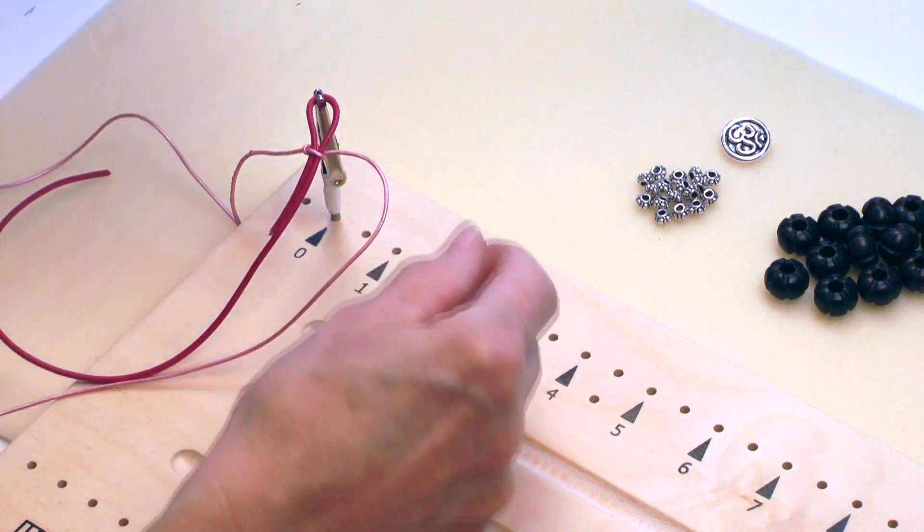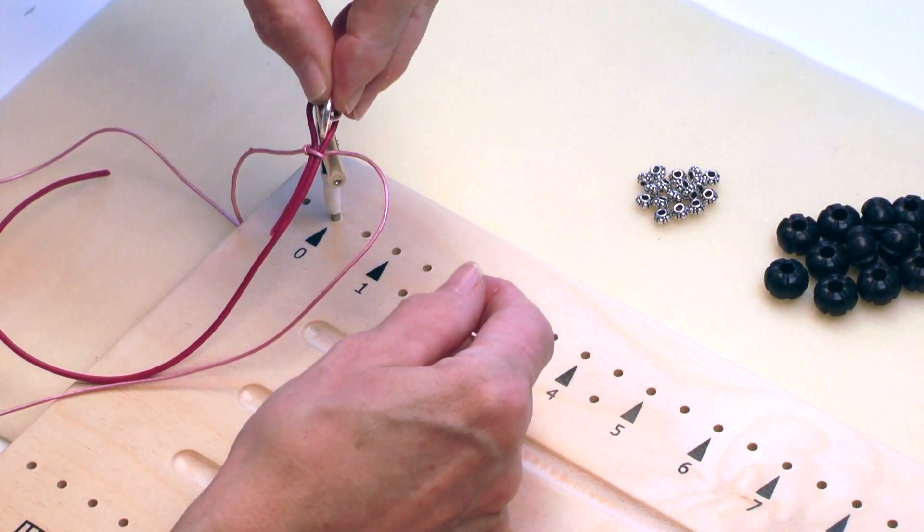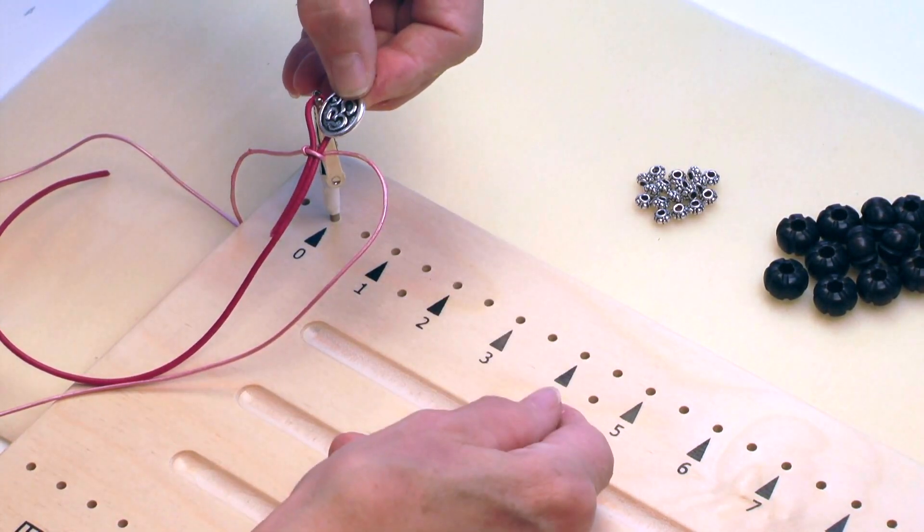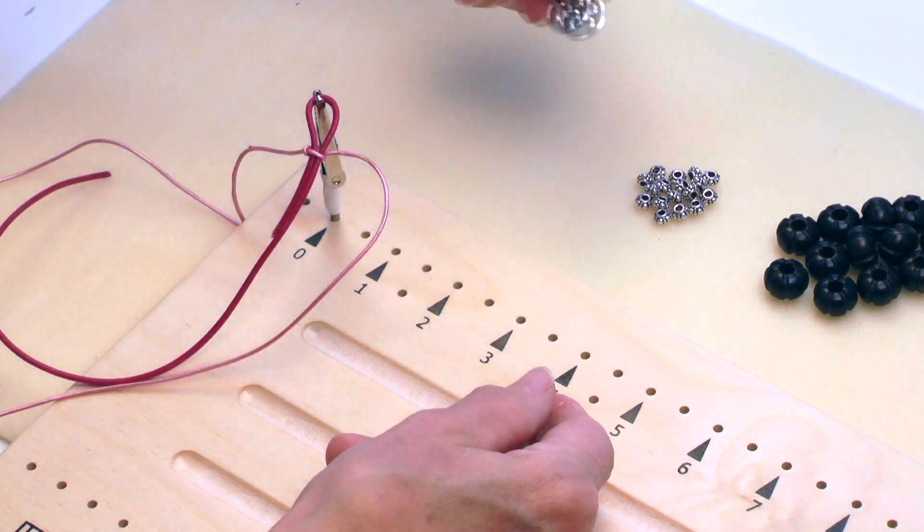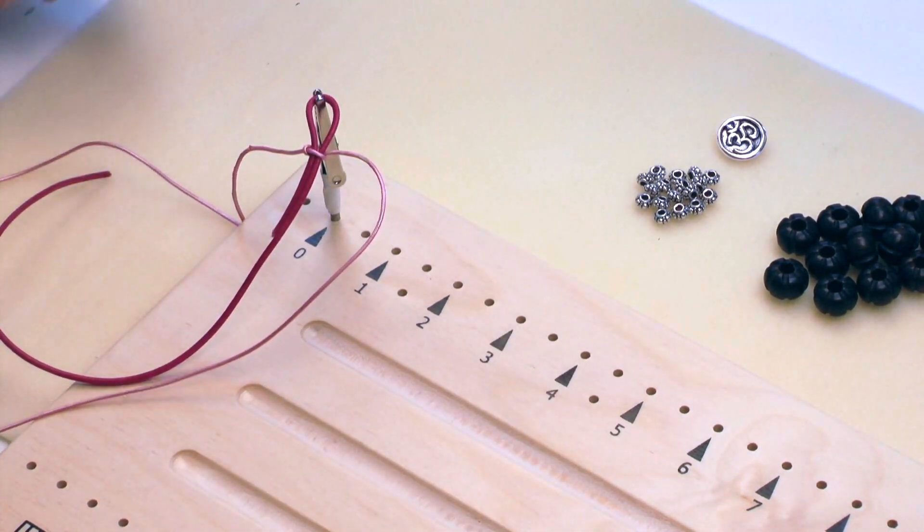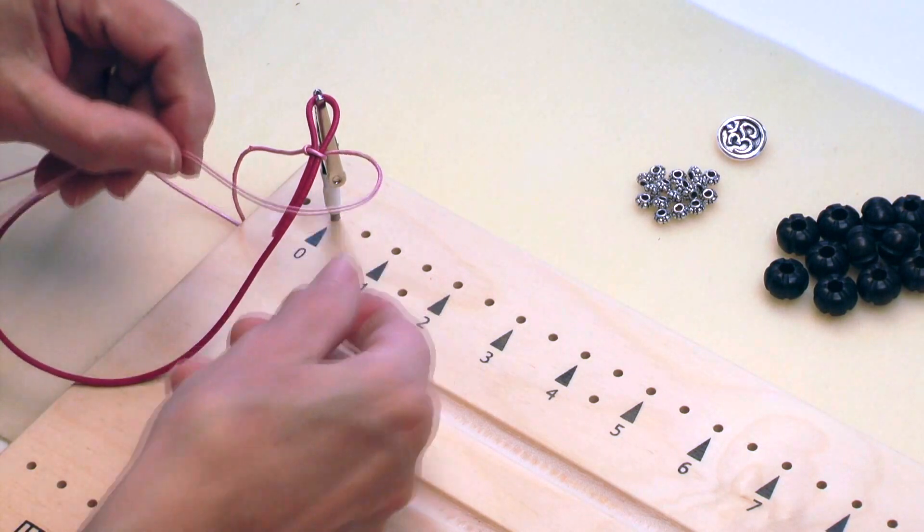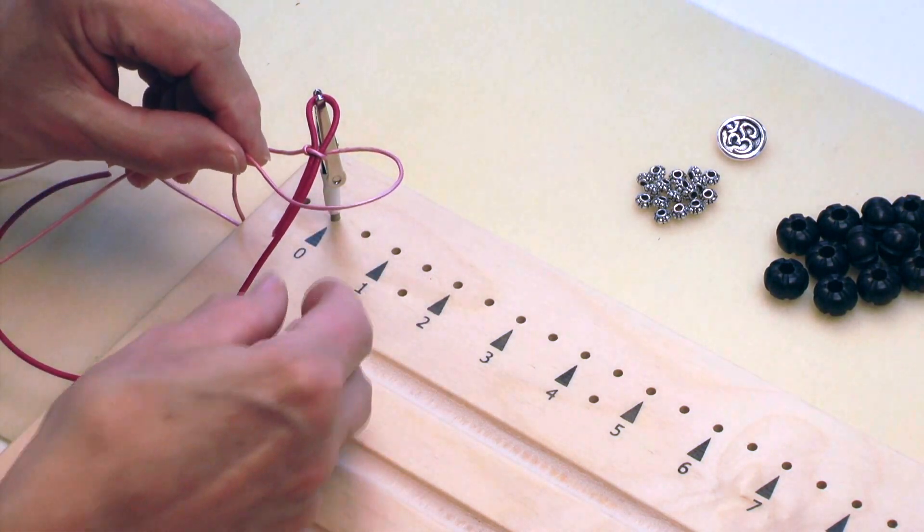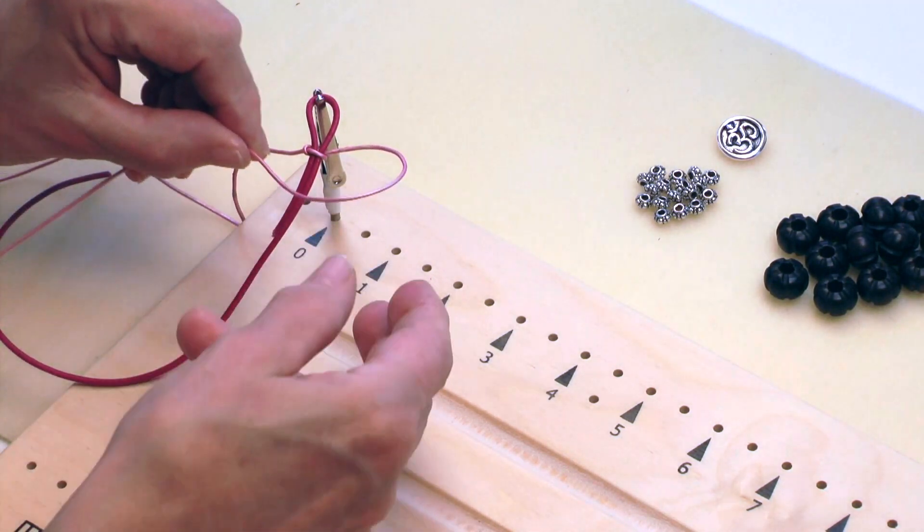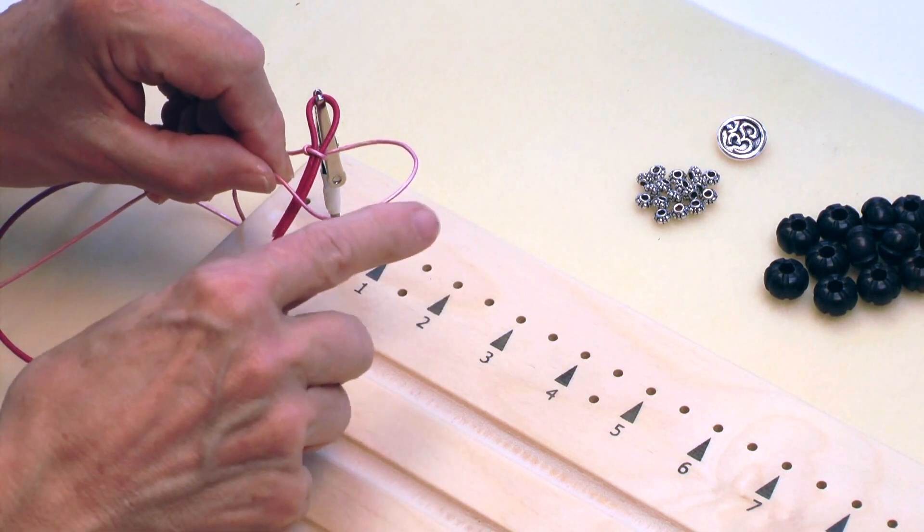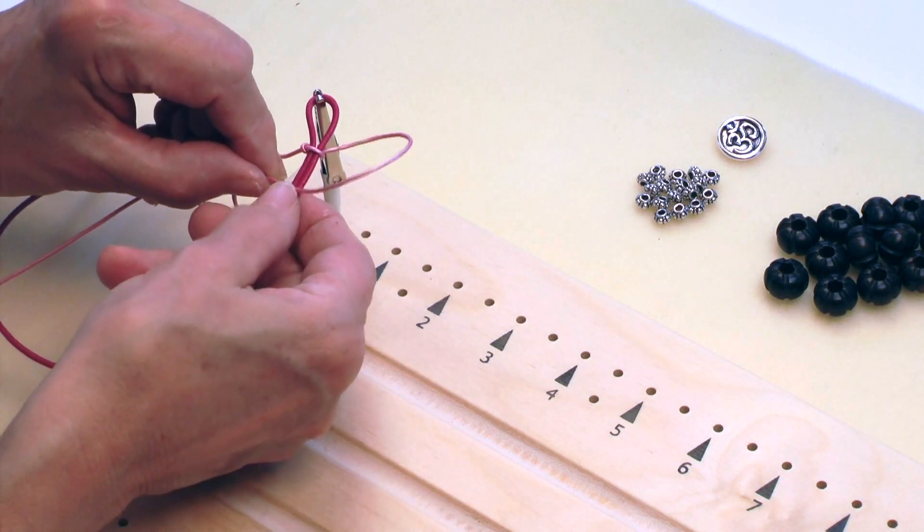The next thing I'll do is just stop for a second and make sure that my button is going to fit nicely through that loop, that looks perfect. So I'll continue to knot about three or four times. Now for this particular knot I'm never going to change sides. If I started with the right hand side of the cord I'm going to continue to use that.